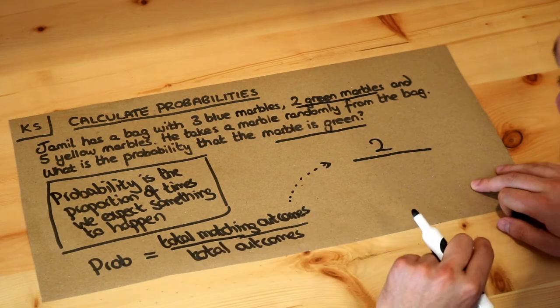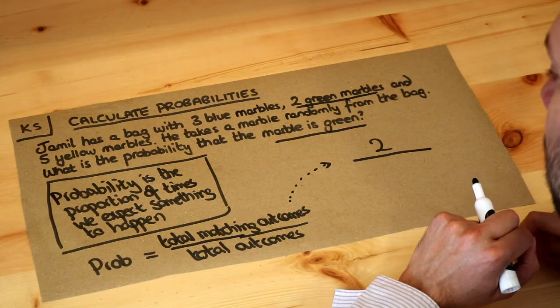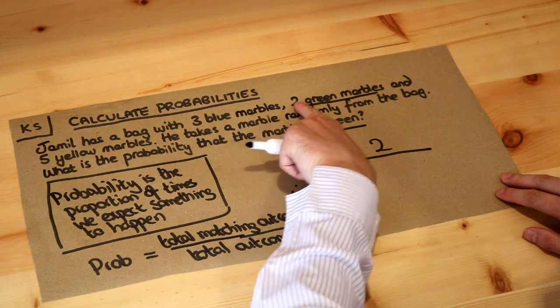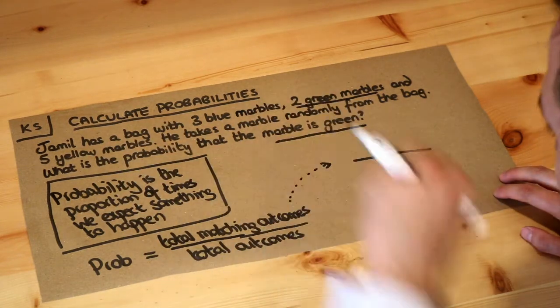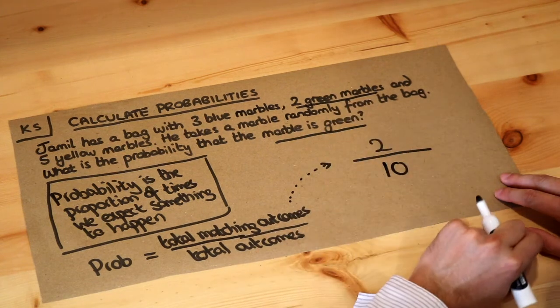And then, what's the total number of outcomes? When we put our hand into the bag, what's the total number of different things we could get? Well, in total we've got three plus two plus five marbles. We're picking from ten marbles, so therefore the total outcomes is ten.